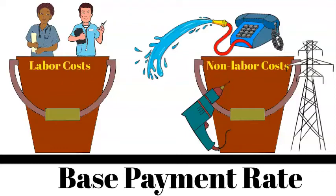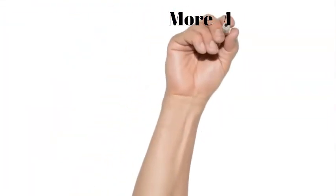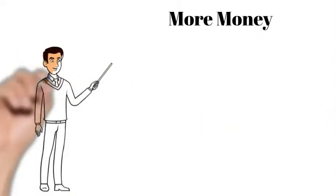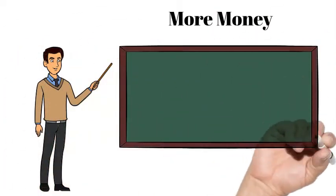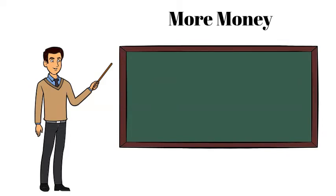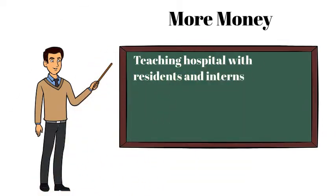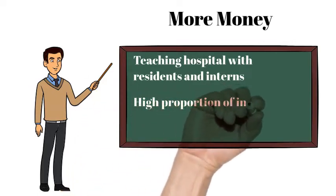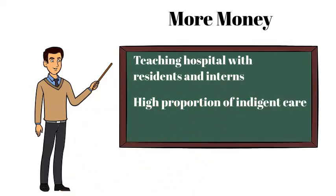Each October, Medicare assigns every hospital a new base payment rate. New Medicare rates consider both nationwide and regional trends. For example, a geographic area could lose its rural designation due to new residential property development and an associated large influx of people. Other factors contribute to hospitals receiving more money from the federal government for inpatient care, including the designation as a teaching hospital with residents and interns, a high proportion of care rendered to poor and uninsured populations, and a facility location designated as rural.